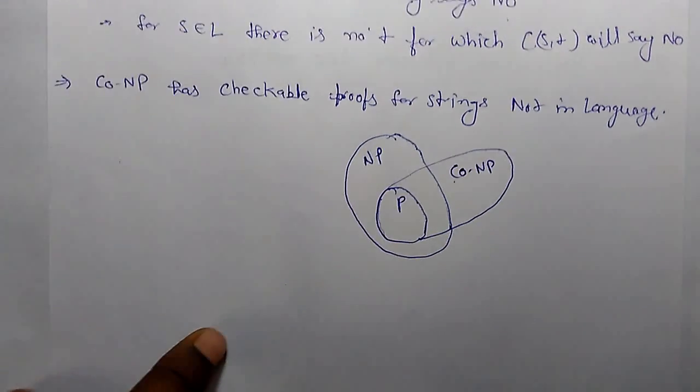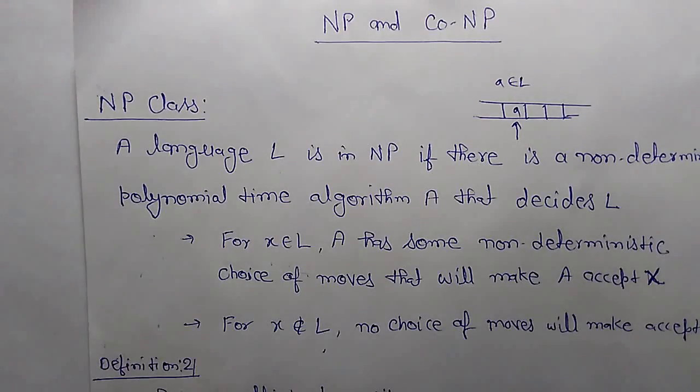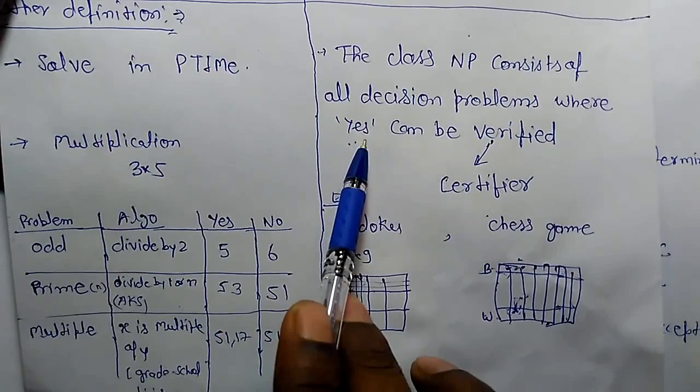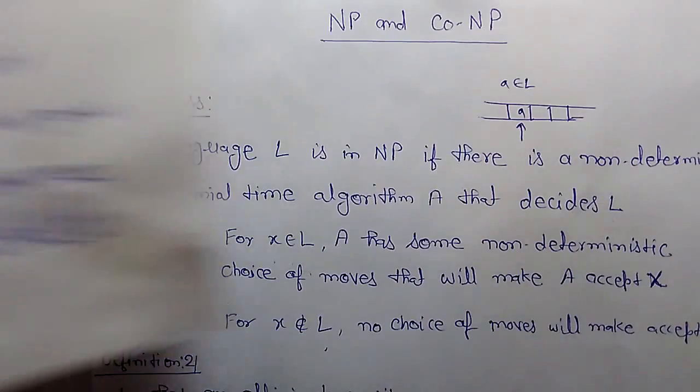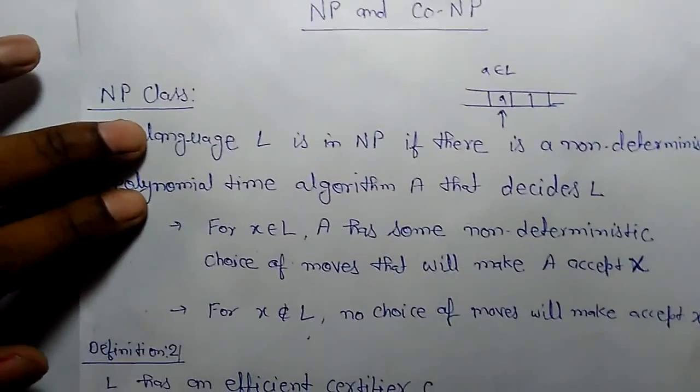So this is the difference between NP and Co-NP class. The important difference is that in NP we have seen about 'yes', but what about 'no'? That answer we will get in Co-NP. Thank you.